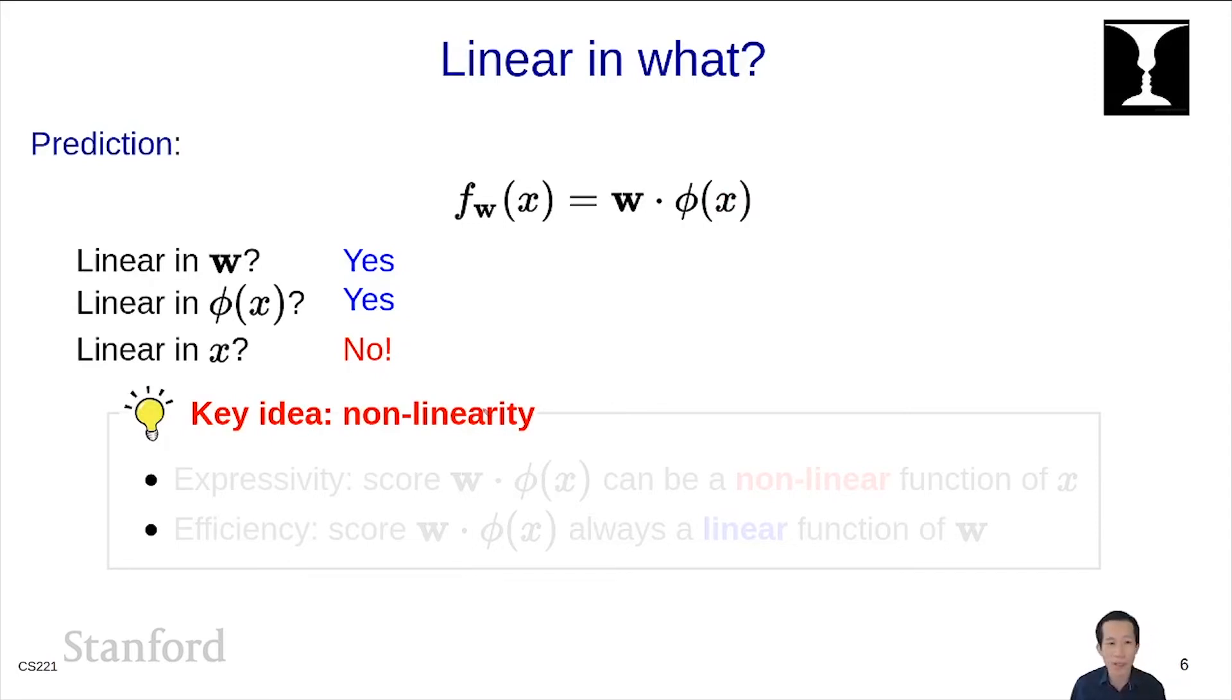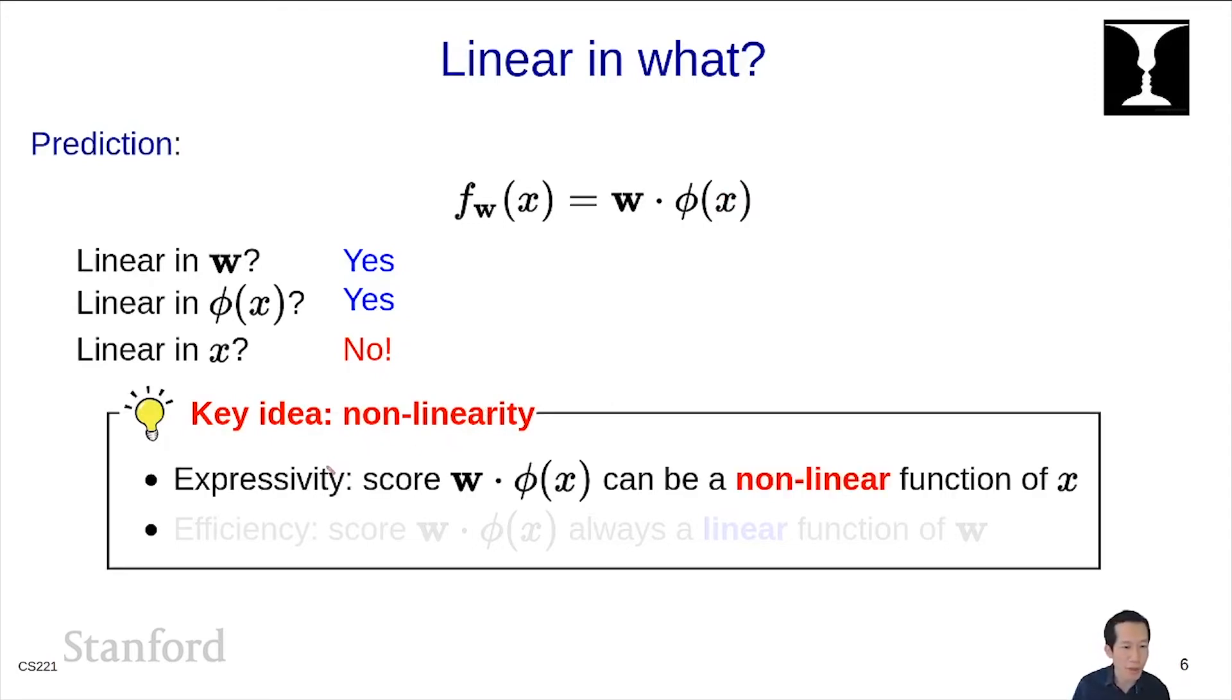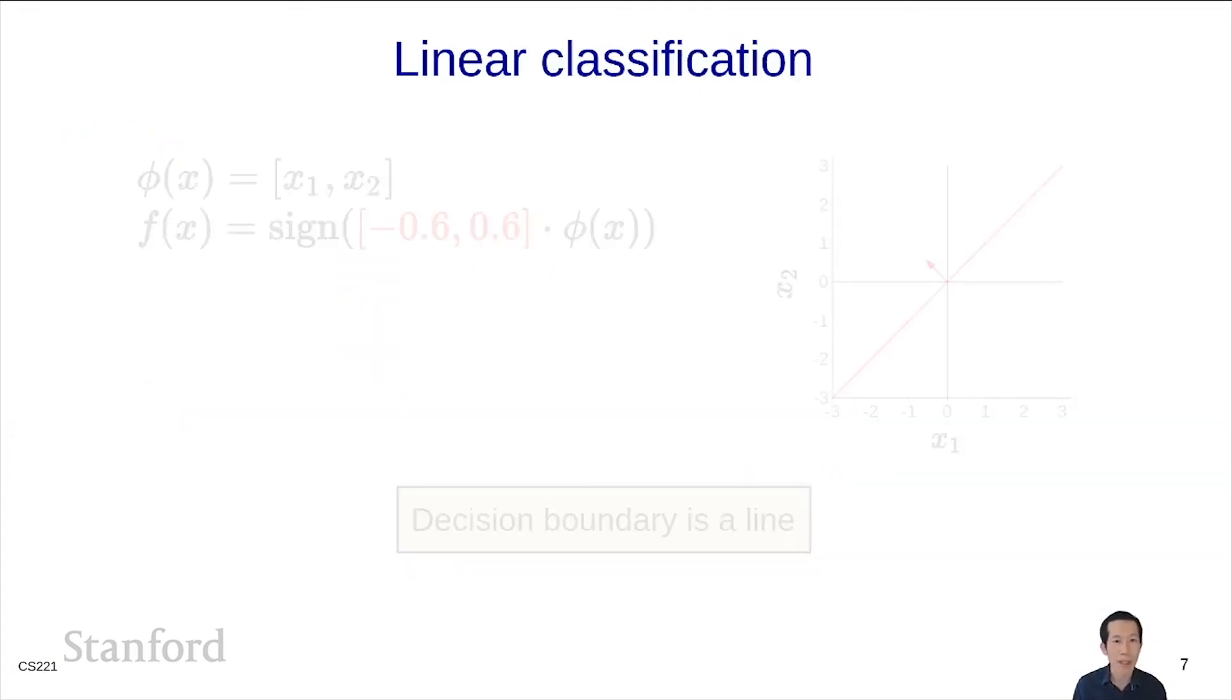The key idea behind nonlinearity is that there's two ways of viewing it. From the point of view of getting expressive nonlinear predictors, this is great because you can define φ(x) to be something and get arbitrary nonlinear functions out. But from the point of view of having to learn such a model, it's actually great because the score is a linear function of w. When you're learning, you take the gradient with respect to w, so the score is just a linear function. Life is great. In fact, the learning algorithm doesn't even care what φ is. It only looks at the data through the lens of φ(x). It doesn't know whether you gave it x and then applied φ or you just gave it φ(x) directly.